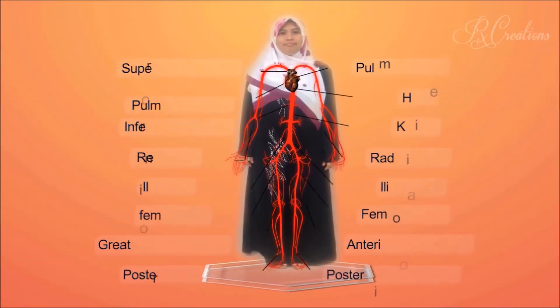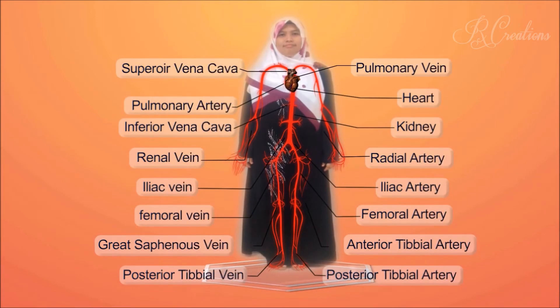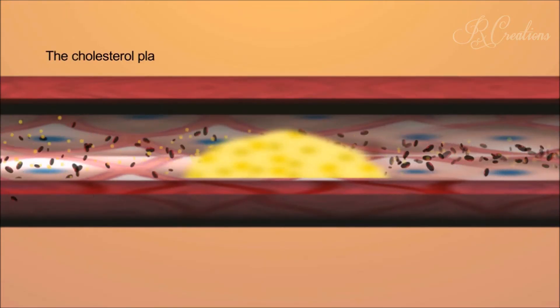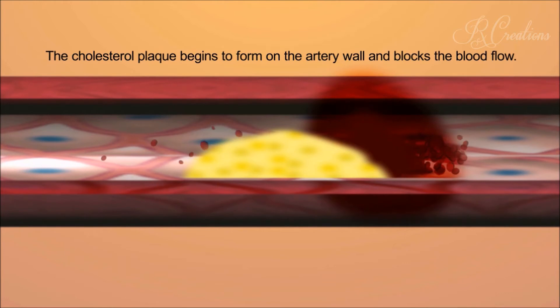The heart is the most important organ in our body, responsible for pumping oxygenated blood to the rest of our body, as oxygenated blood provides the energy the entire body needs to function. Just like other organs, the heart muscle also needs a supply of blood to function. When the amount of cholesterol increases in our blood, it flows together with blood cells through arteries, causing cholesterol plaque to form on the artery wall.